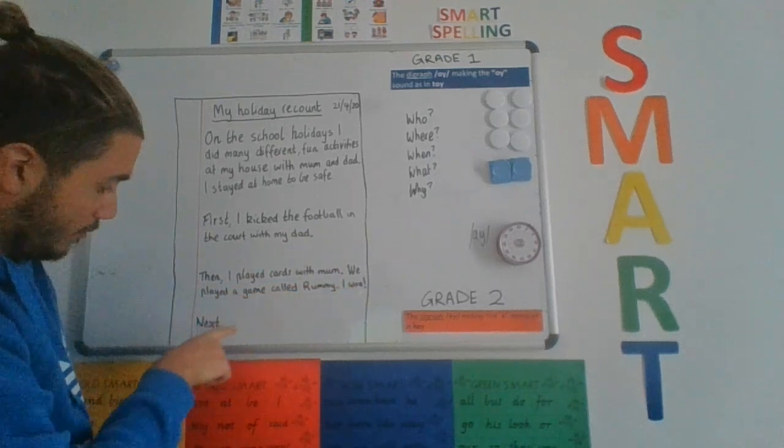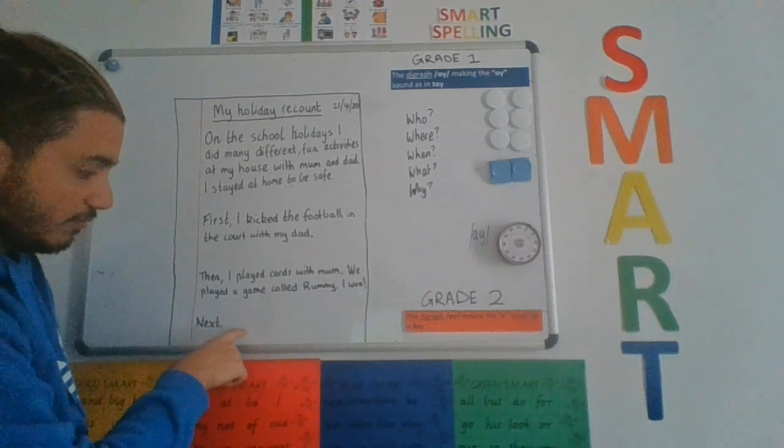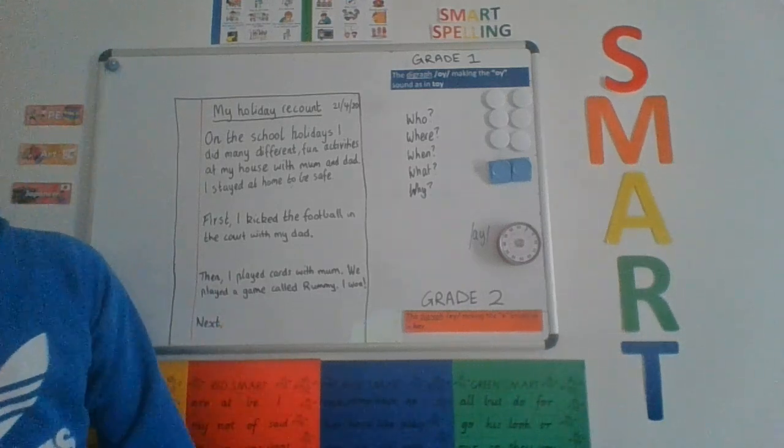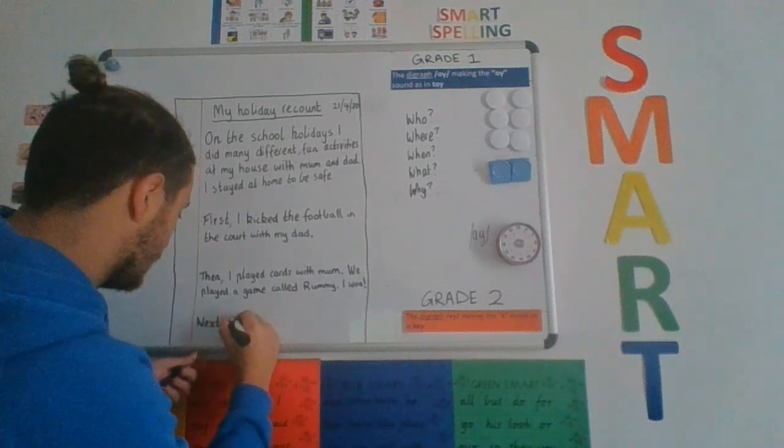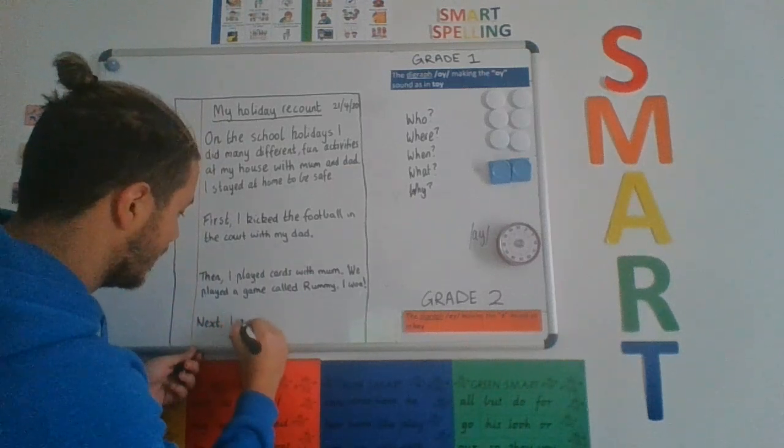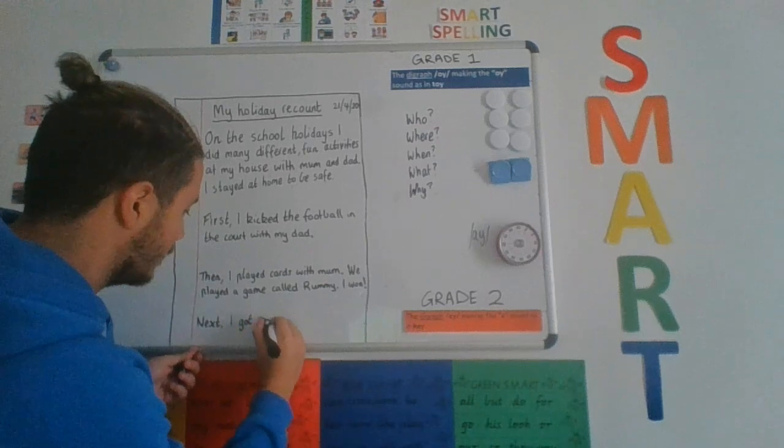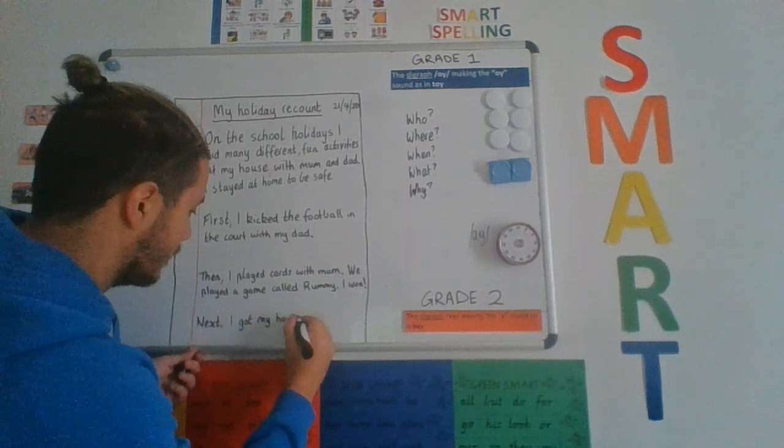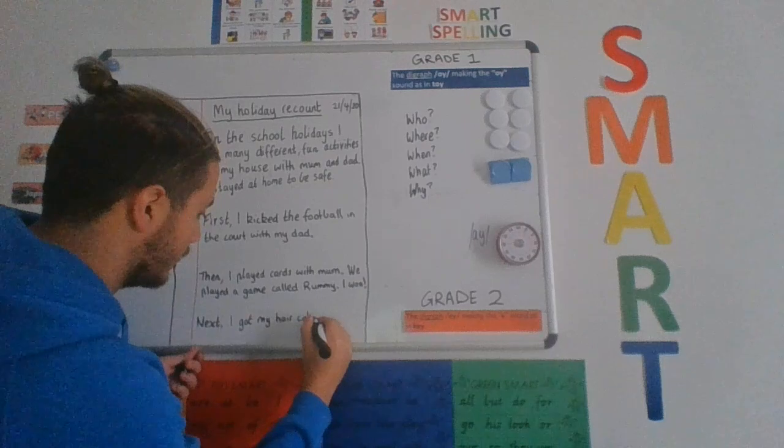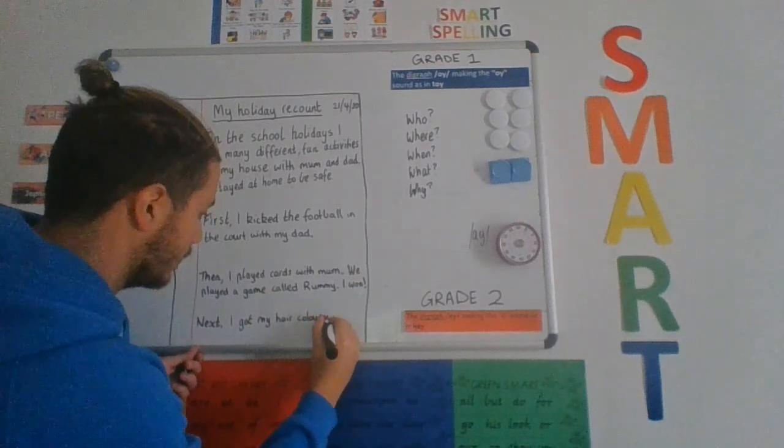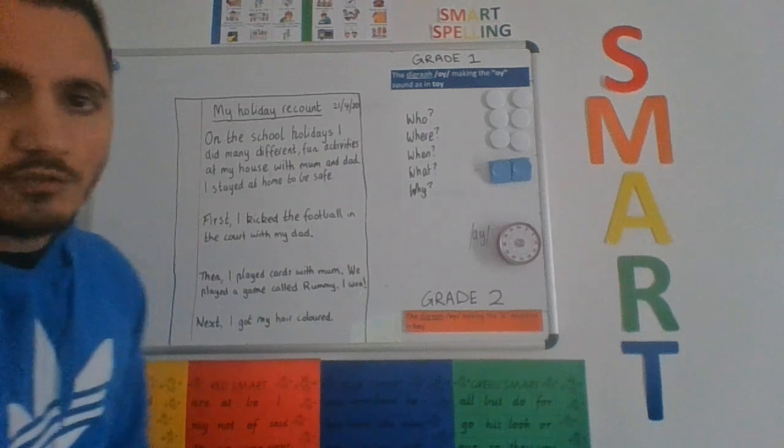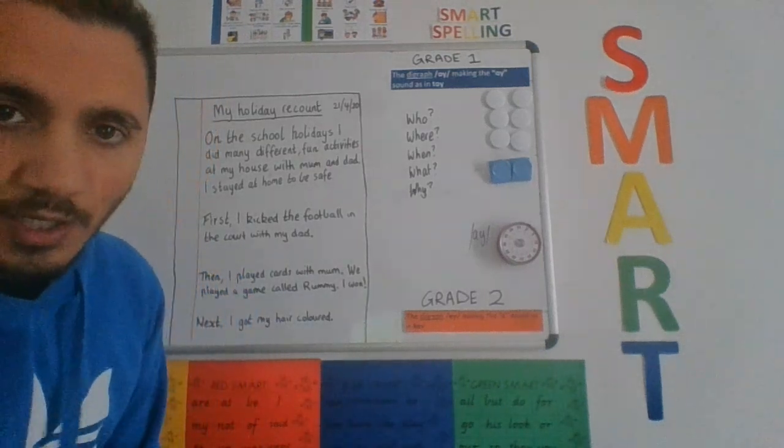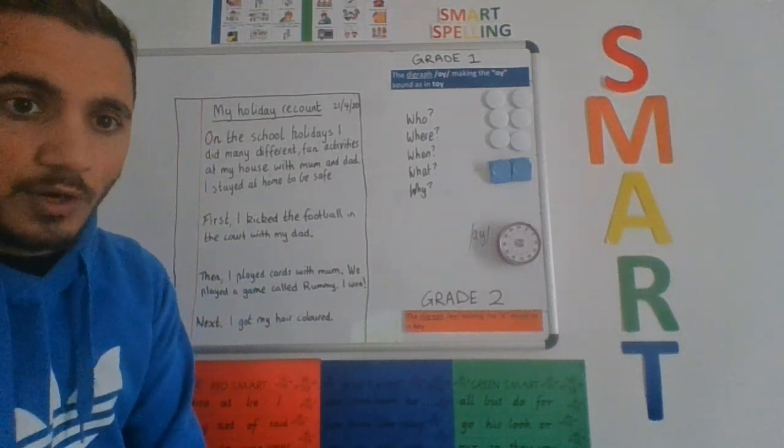Okay, so I might write the next one here. I'll start by writing this one. Next, so next I got my hair colored. And my next sentence could be, my mum is a hairdresser and she colored my hair a lighter brown.